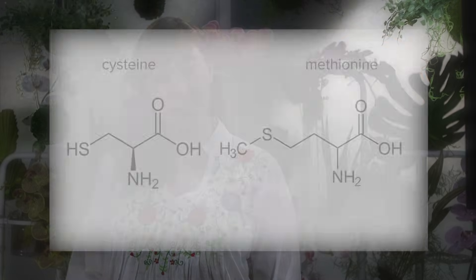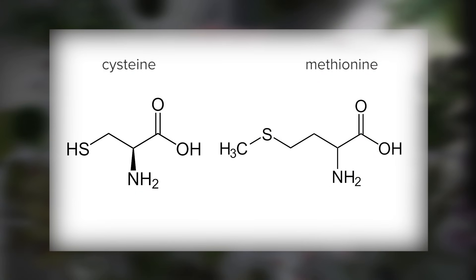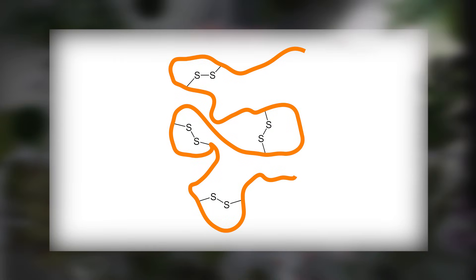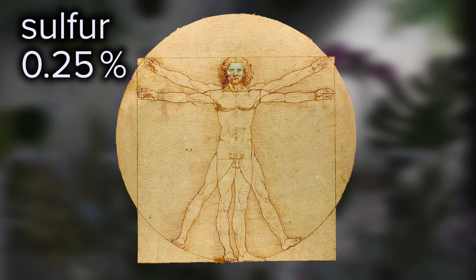And finally, sulfur. Sulfur is found in two amino acids: cysteine and methionine. Amino acids string together to form proteins, and these are 2 of the 20 amino acids. The sulfurs from these amino acids tend to bind together, forming disulfide bridges, which help hold a folded protein together in its final 3D shape. A few organisms use selenium instead of sulfur, but for most organisms it's a fundamental part of what makes us. 0.25% of humans are sulfur.